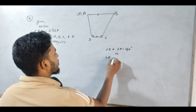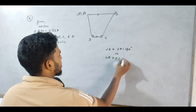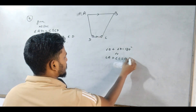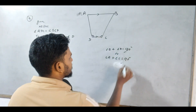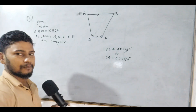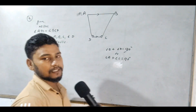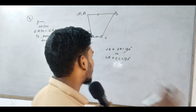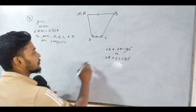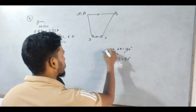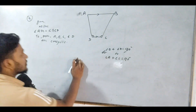Angle A is equal to 180 degrees. And if you have to prove that ABCD is cyclic, so what do you do? I have to prove this. Let me tell you.